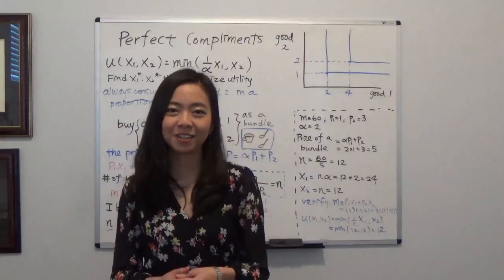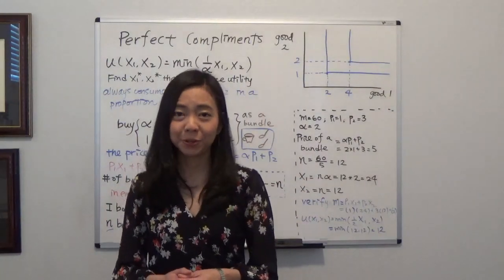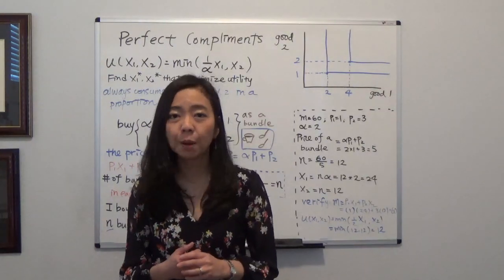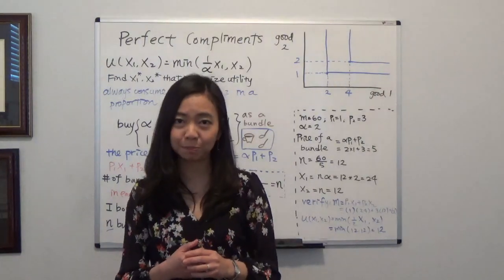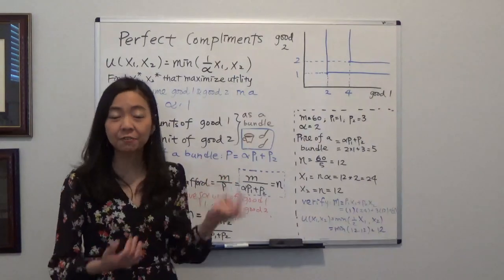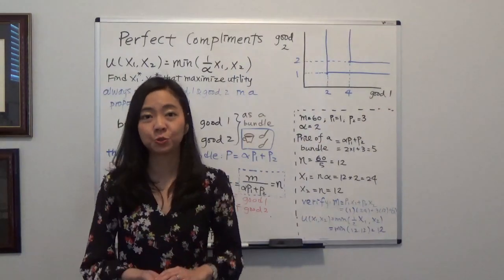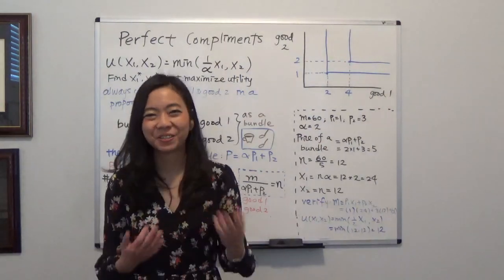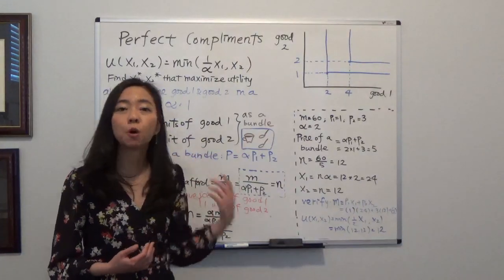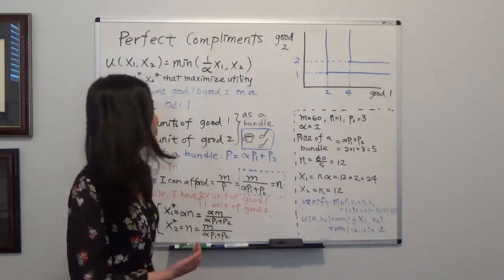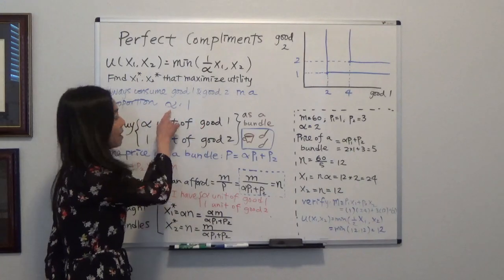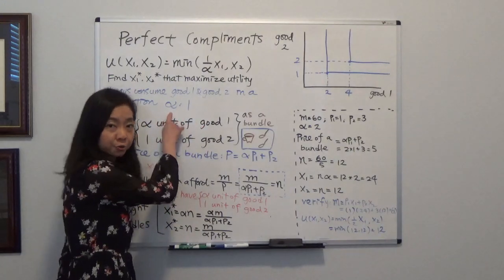Hello everyone! My name is Iris Franz. I'm Lian Wairun. Today we're going to talk about how to find the optimal consumption bundle X1 and X2, given that these two goods are perfect complements. So suppose you have two goods, good one and good two, then you always consume one unit of good two with alpha units of good one.